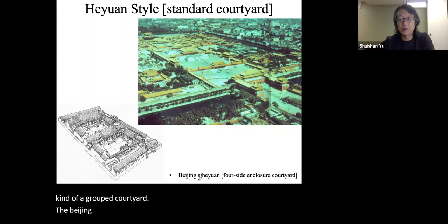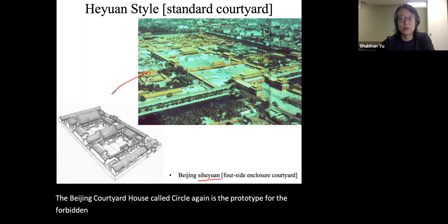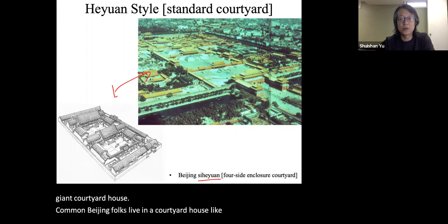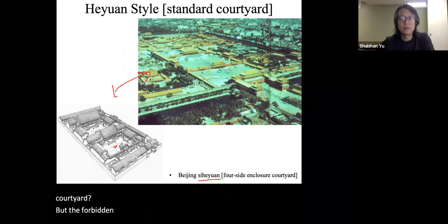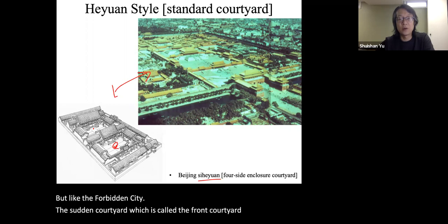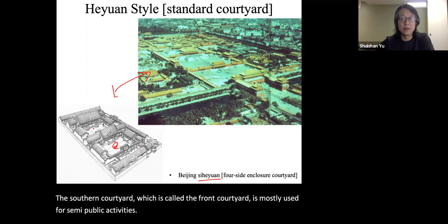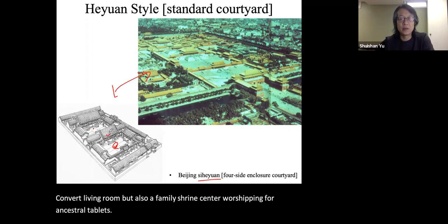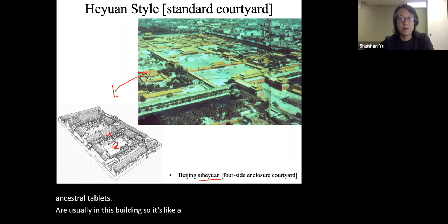The Beijing courtyard house called Si He Yuan is the prototype for the Forbidden City. Common Beijing folks live in a courtyard house that features a courtyard. Like the Forbidden City, the front courtyard is used for semi-public activities. The main building is often used as a living room but also as a family shrine center, where worshipping of ancestral tablets takes place — so it functions as a household religious center.